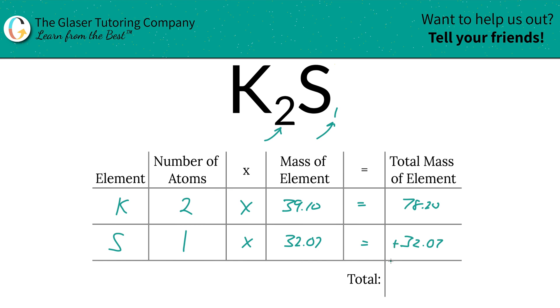And then simply add this column up to find the total mass of the entire compound. So the total mass here is going to be 110.27. Since we're solving for molar mass, the units here are in grams per mole. That's all there is to it.